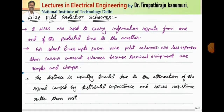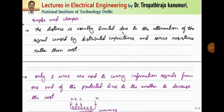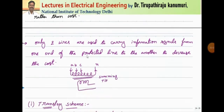Let us start with the pilot wire protection schemes. Because we are employing three-phase protection, for single phase two wires are required, and for three phase at least four wires are required — three for the phases and one for the neutral. To keep costs down, instead of four wires, we use two wires to carry the information signals from one end of the protected line to the other. For short lengths up to 30 kilometers, the wire pilot schemes are less expensive than carrier current schemes because the terminal equipment is simpler and cheaper. The distance is limited due to attenuation of the signal caused by distributed capacitance and series resistance, which is why it is limited between 15 to 30 kilometers.